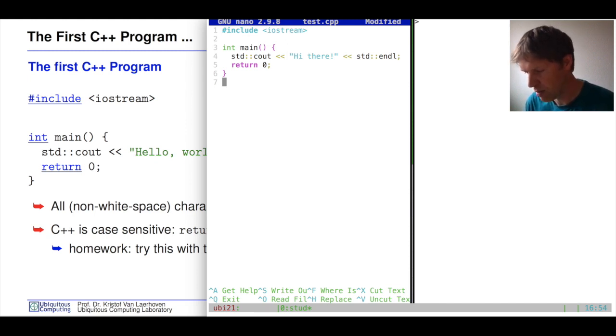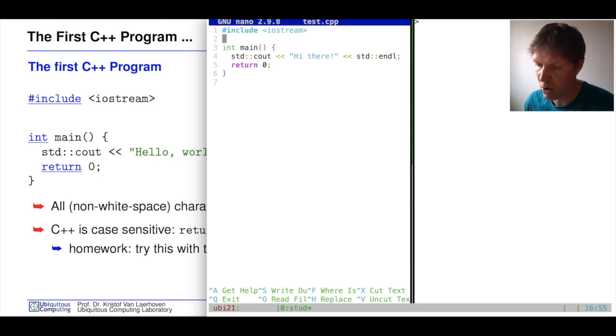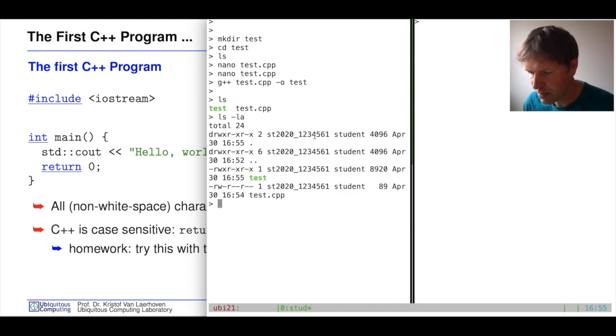Once we have this, we have a file, but we cannot execute this. We still need to translate this into machine codes that our operating system, our computer can understand. Therefore, we have to convert this text file into an executable. We're going to say this is called test. If we execute that, we don't get an error, which is great. It's always a little bit of suspense. But we're now at a stage where things tend to work. Once we want to execute this executable, we have in our directory several files: our executable, which is just called test, and our source code, which is called test.cpp. If we want to see how big those are, our executable is about almost 9000 bytes large, whereas our cpp file is just 90 bytes. So it's very short.